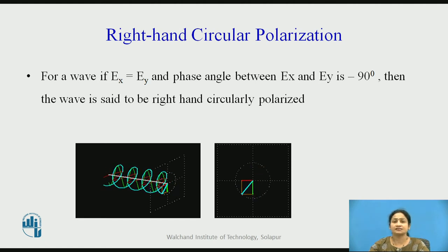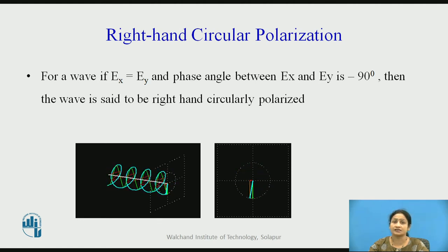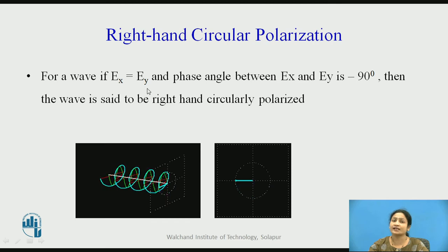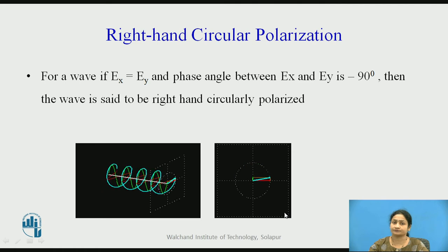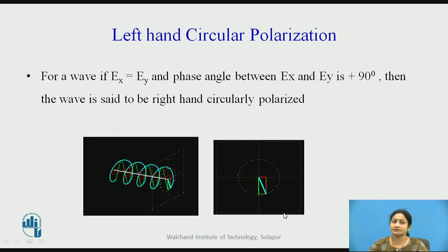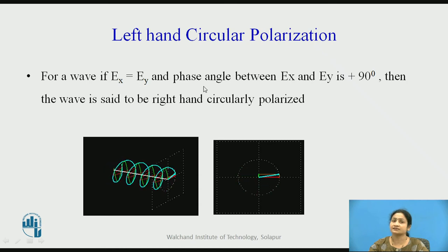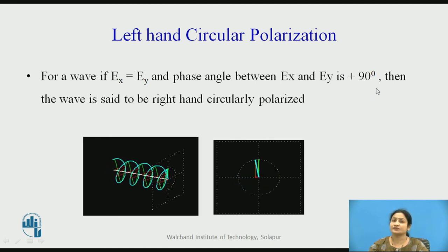Circular polarization exists in two forms: right-hand circular polarization (RHCP) and left-hand circular polarization (LHCP). For right-hand circular polarization, the phase difference between the electric field in the x and y directions is exactly −90 degrees, and the tracing of points forms a circle. For left-hand circular polarization, the electric field components in x and y have the same amplitude but a phase angle of +90 degrees, and the wave also traces a circle.